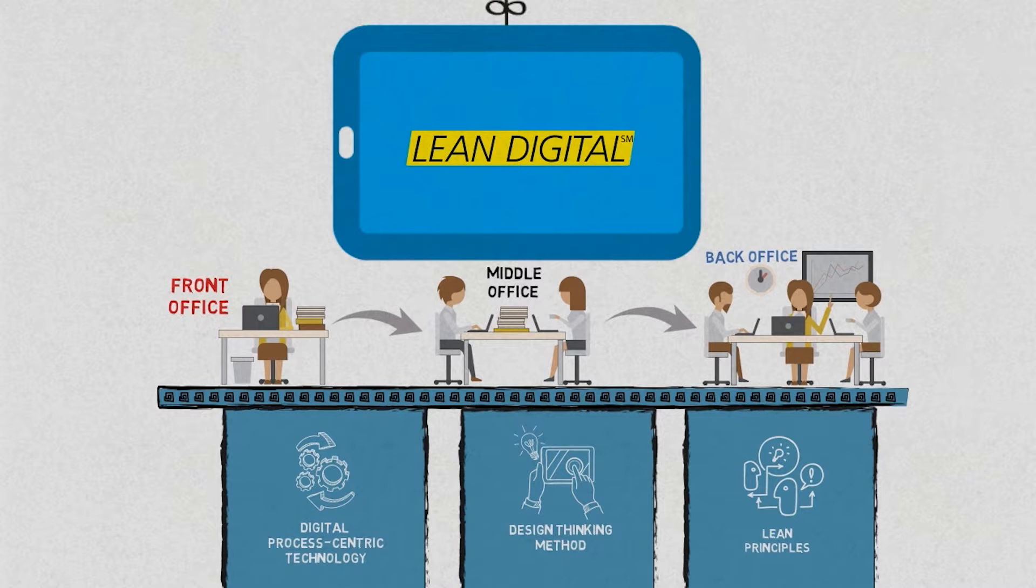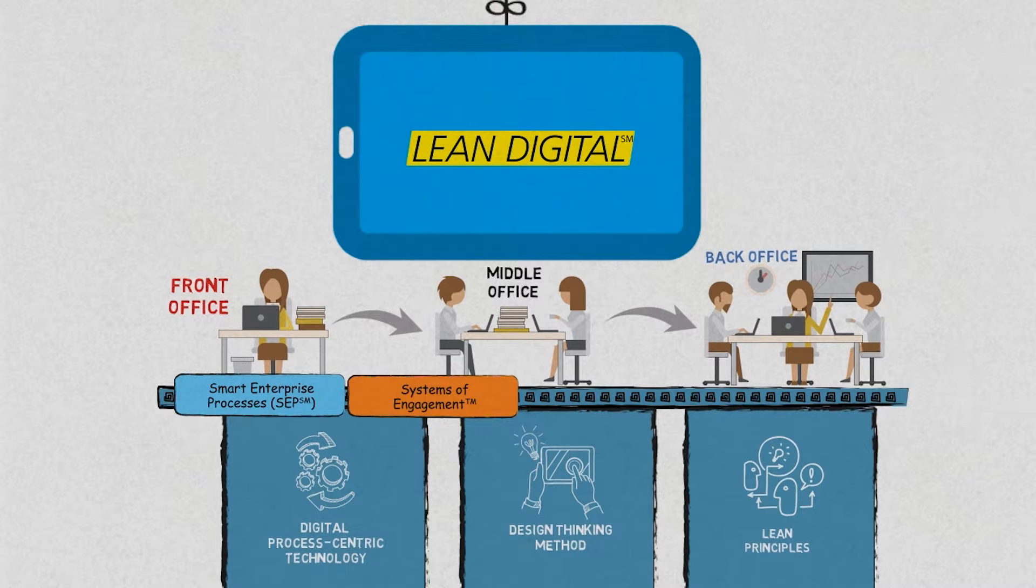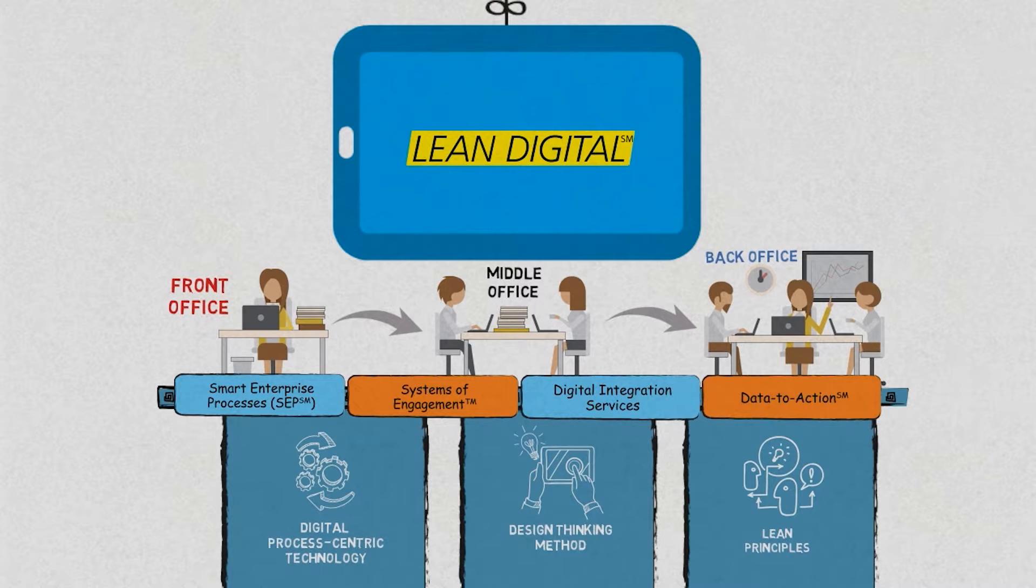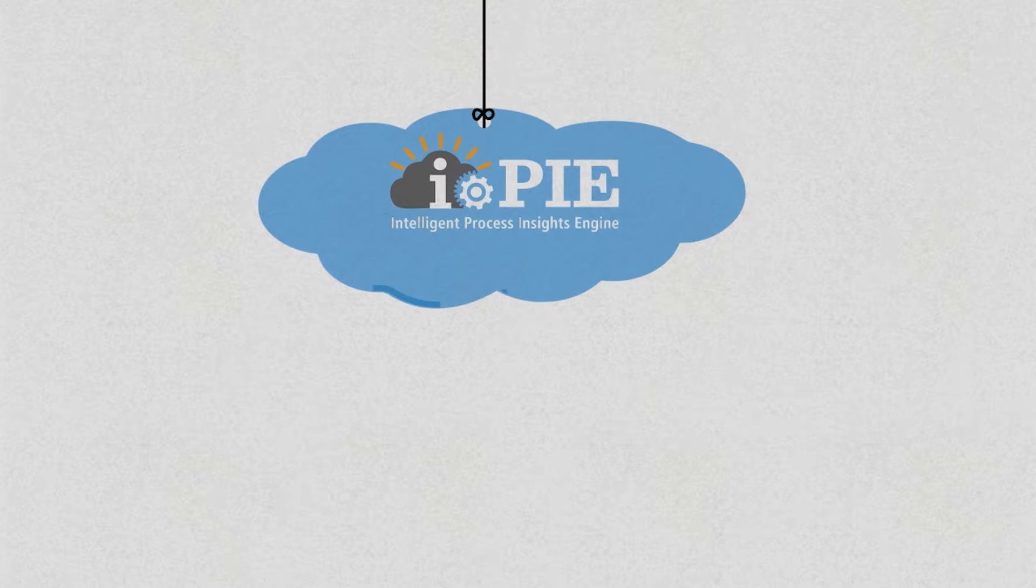Specifically, Lean Digital leverages business transformation methods like Genpact's patented Smart Enterprise Processes Framework, system of engagement solutions coupled with related digital integration services and data-to-action analytics that, when combined together, create intelligent operations.